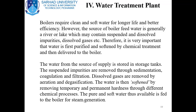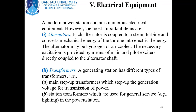The last constituent is electrical equipment. A modern power station contains numerous electrical equipment. The most important are alternators coupled to steam turbines, which convert mechanical energy of the turbine into electrical energy. Alternators are of two types: hydrogen cooled and air cooled — cooling is essential because if the alternator is not kept cool, it will stop working when it exceeds its threshold temperature. The necessary excitation is provided by means of an exciter and pilot exciter directly coupled to the alternator shaft.